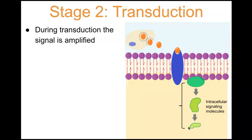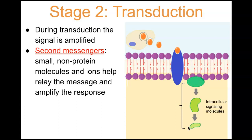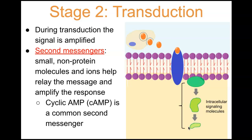During transduction the signal is also amplified through second messengers — small non-protein molecules and ions that help relay and amplify the response needed within the cell. Cyclic AMP (cAMP) is a common second messenger used in transduction.